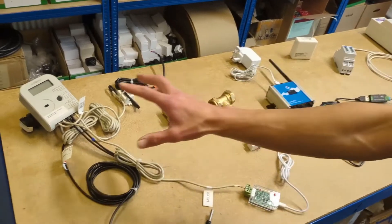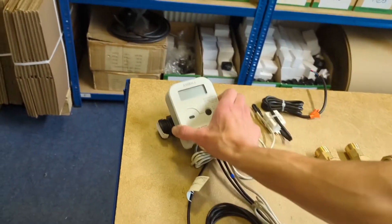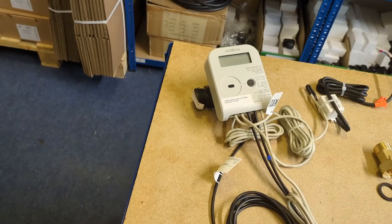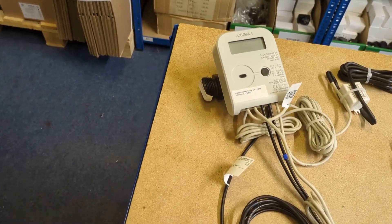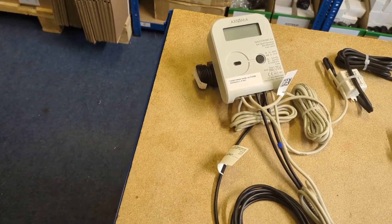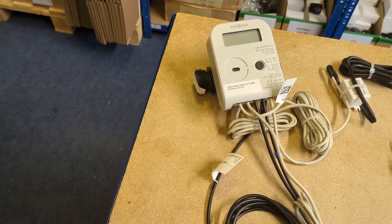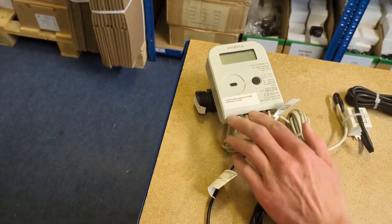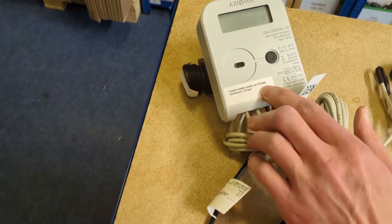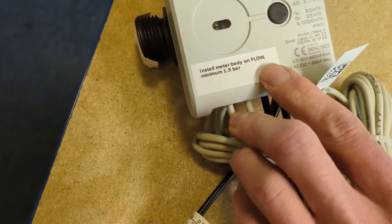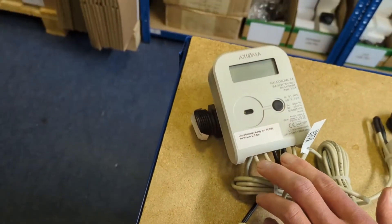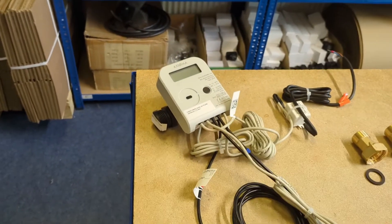We'll start with the heat meter. This measures the heat output from the system and needs to be installed on the primary pipework. Generally the heat meter body needs to be installed on the flow, but there'll always be a sticker on it to confirm that. Double check with the sticker where the heat meter needs to go.